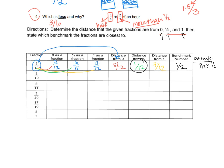For 2/10: zero is 0/10, one-half is 5/10, one is 10/10. The distance from zero is 2/10, from one-half is 3/10, and from one is 8/10. The smallest distance is 2/10, so 2/10 is closest to zero — that's its benchmark.